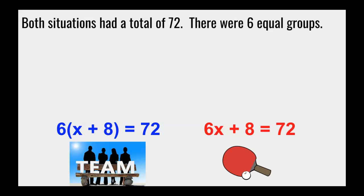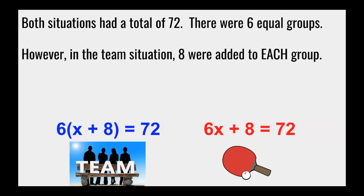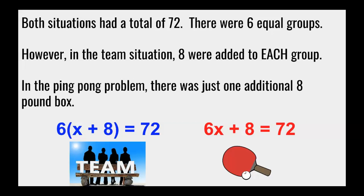Firstly, they both had a total of 72. There were 6 equal groups. In the team situation, 8 were added to each group. But in the ping pong problem, there was just one additional 8 pound box.